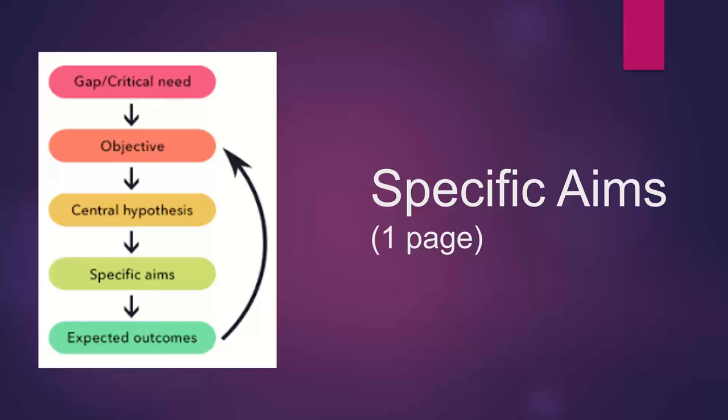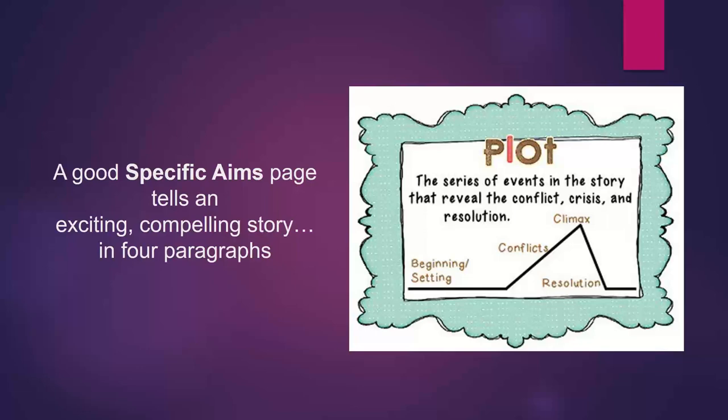For specific aims, you're going to talk about the gap or critical need in the literature related to your problem, your objective, your central hypothesis, your specific aims, and the expected outcomes. A good specific aims page tells an exciting, compelling story in four paragraphs. Think of this aims page like a plot to a story — you're going to start out with a beginning or setting the stage, describe conflicts, point to the climax, and then a resolution of the story.